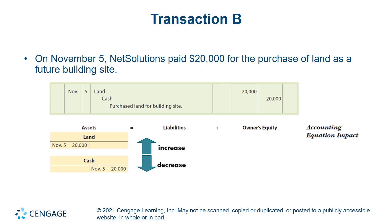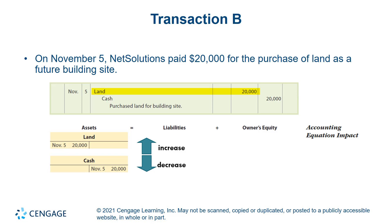November 5th, NetSolutions paid $20,000 for the purchase of land as a future building site. Right away, cash was paid, so cash decreased — it's an asset, and a decrease in assets is recorded on the credit side. The other account is land, also an asset. Land increased because of the purchase — the company gains this asset — and an asset increase is recorded on the debit side. So land is debited $20,000.